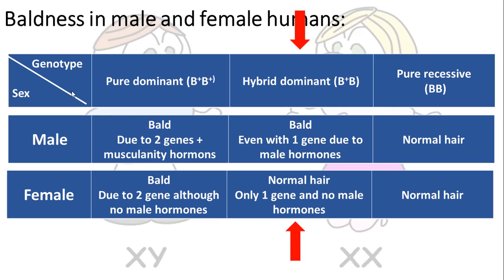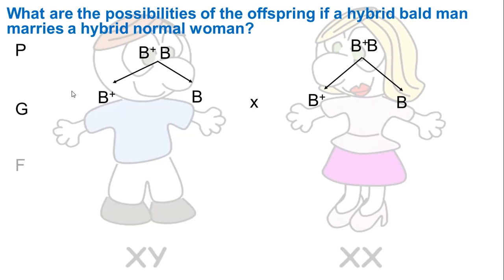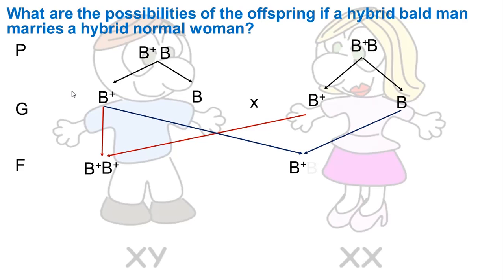What are the possibilities of the offspring if a hybrid bold man marries a hybrid normal woman? Both have the same genotype B+B, since this is the only genotype where males and females have different phenotypes. The gametes will be B+ and B. Crossing them gives B+B+, B+B, B+B, and BB.